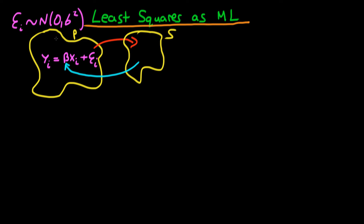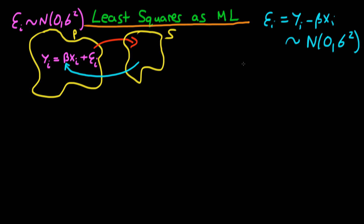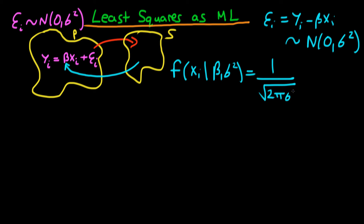Well, it's quite easy, seeing as we know that epsilon_i is normally distributed. We can write that epsilon_i is equal to yi minus beta times xi, so it must be the case that yi minus beta*xi is itself normally distributed with a mean of zero and a variance of sigma squared. That makes it very easy to write down the likelihood function for one particular observation: L(xi | beta, sigma²) = (1 / sqrt(2*pi*sigma²)) * exp(-(yi - beta*xi)² / (2*sigma²)).